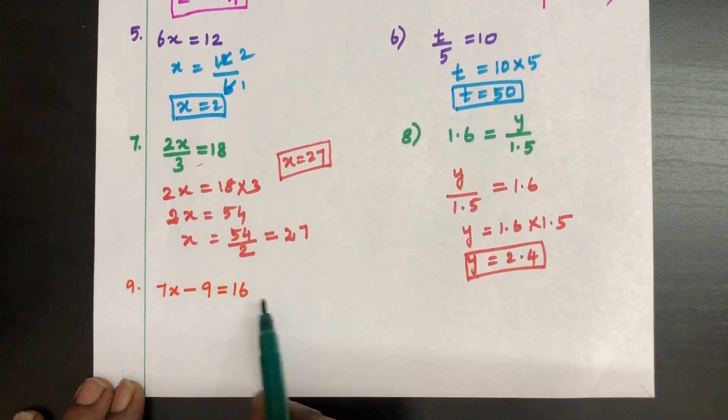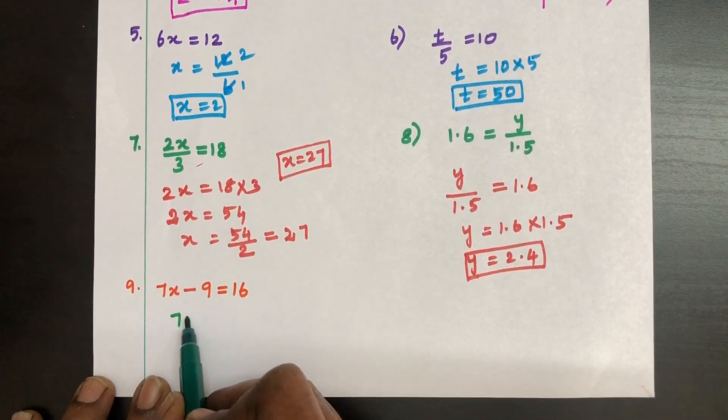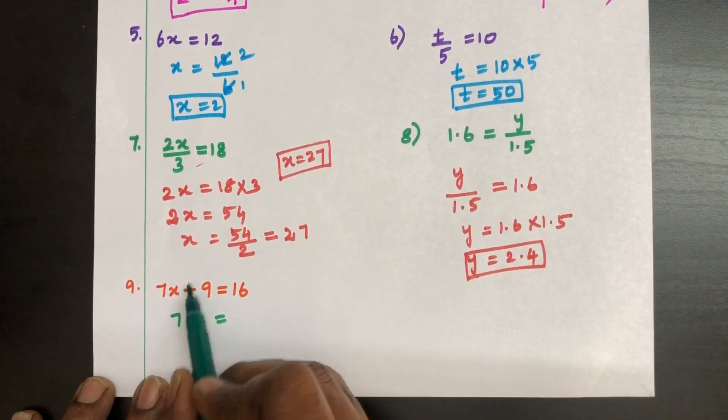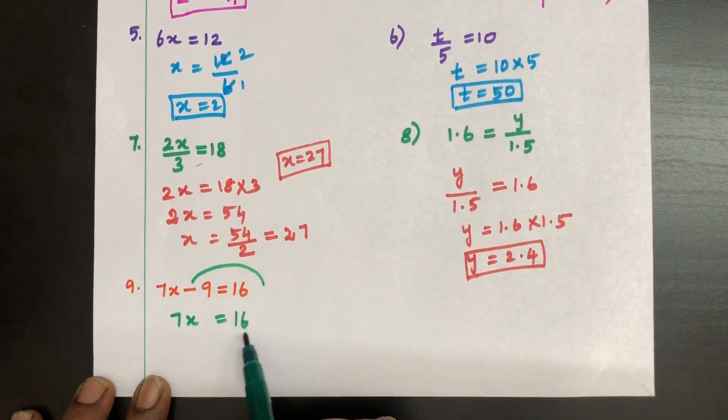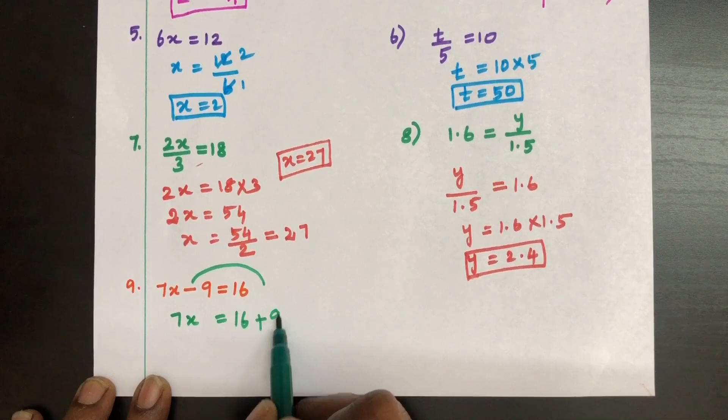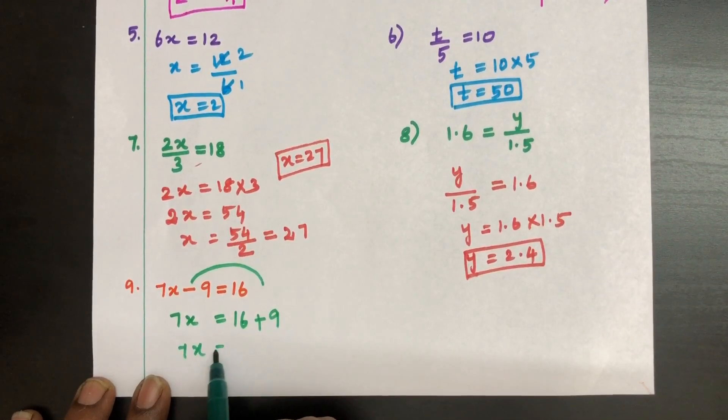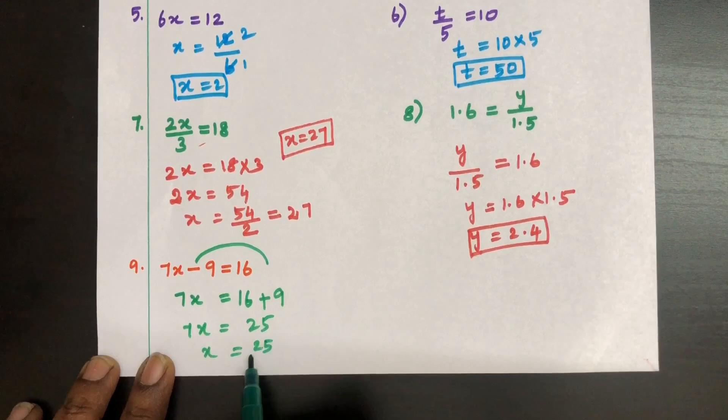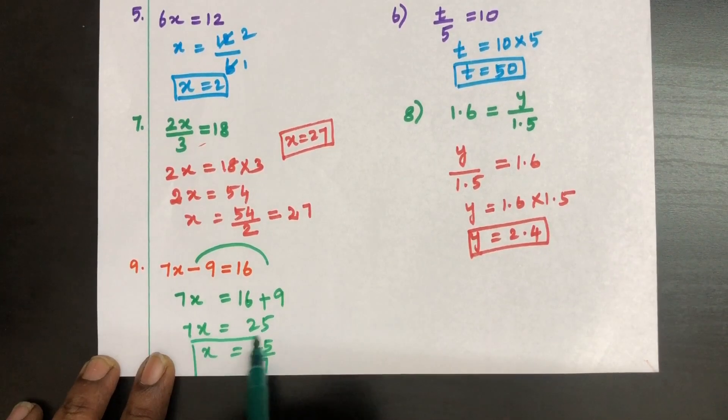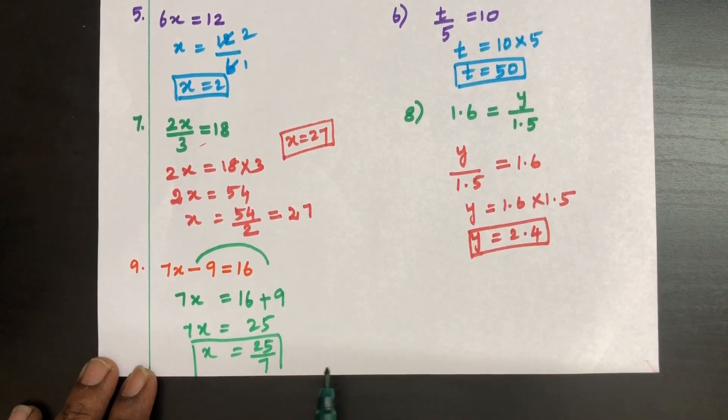7X minus 9 is equal to 16. So have your variable left side, have all the numericals right side. 16 is already there. So take this minus 9 right side. So minus becomes plus 9. 7X equal to 25. X equal to 25 divided by 7. The value of X here is 25 divided by 7.